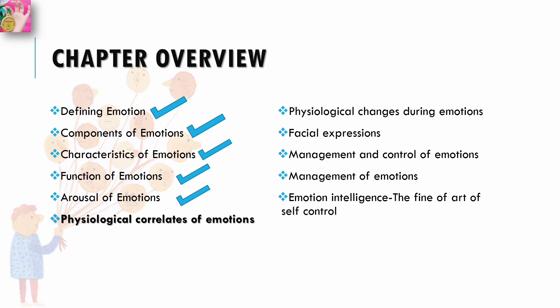In Part 4, we learned about the arousal of emotion — what kind of physiological changes occur during arousal and what physiological changes lead to the arousal of emotions. It was quite interesting when I was making Part 4. All the links are given in the description section if you have missed any of the previous lectures.